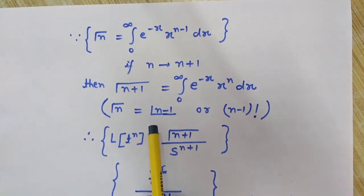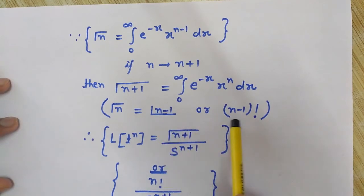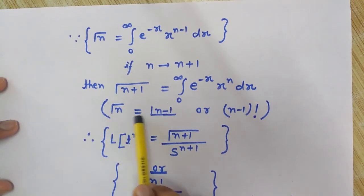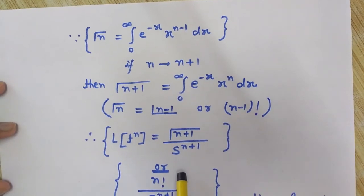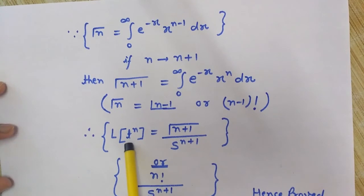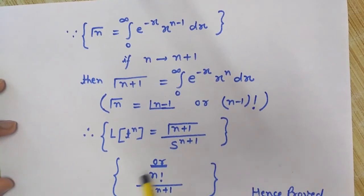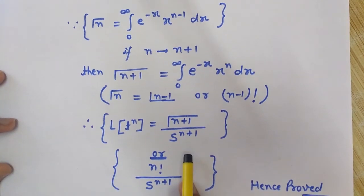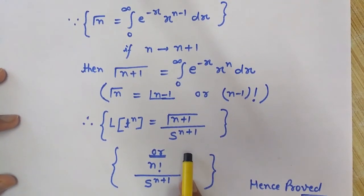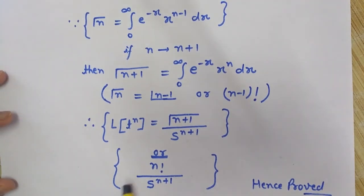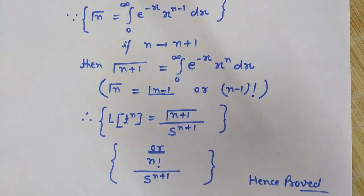Now, gamma(n) equals factorial of (n minus 1). For example, gamma of 7 equals 6 factorial. Therefore the Laplace transform of t to the power n equals gamma(n+1) divided by s to the power n plus 1. We can also write this in terms of factorials: since gamma(n+1) equals n factorial, the result is n factorial divided by s to the power n plus 1.